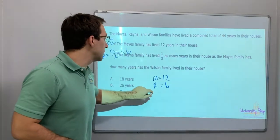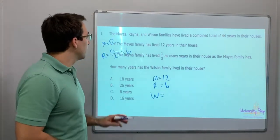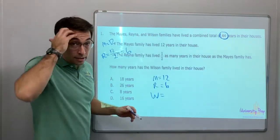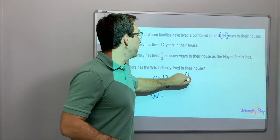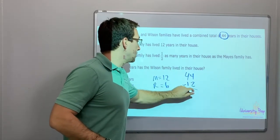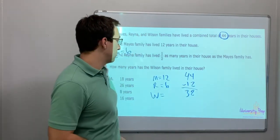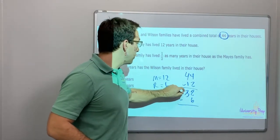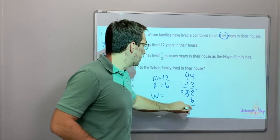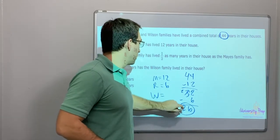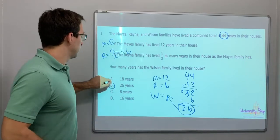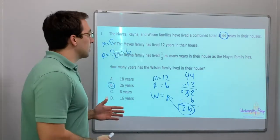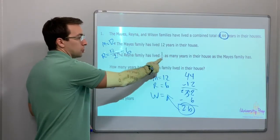And then, how many years is the Wilson family? Well, 44 years total, right? So let's do some subtraction. 44 minus 12 is 32. 32 minus 6 is, borrowing from the 3, 26. See that? So the trick is that the division came from 12 divided by 2.